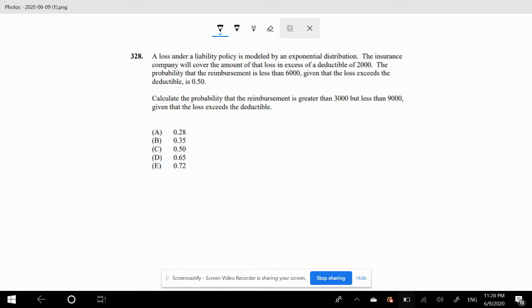The problem states that a loss under a liability policy is modeled by an exponential distribution. So we know that X is our loss, and that is our exponential distribution—we just don't know what lambda is yet. X is for t greater than zero. Now Y is our payout to the customers.